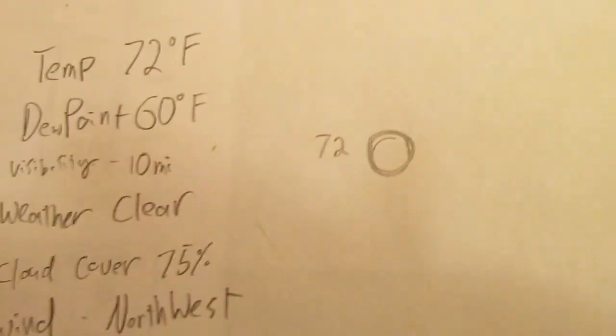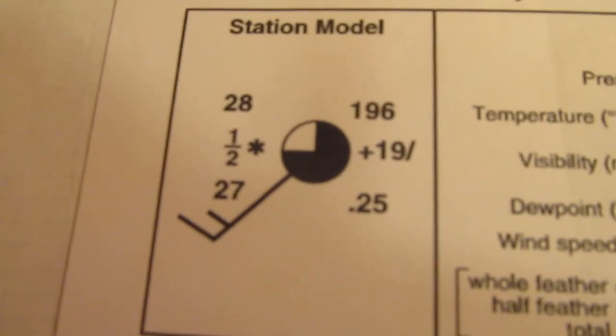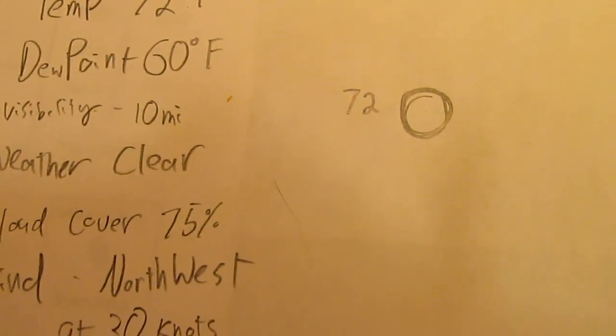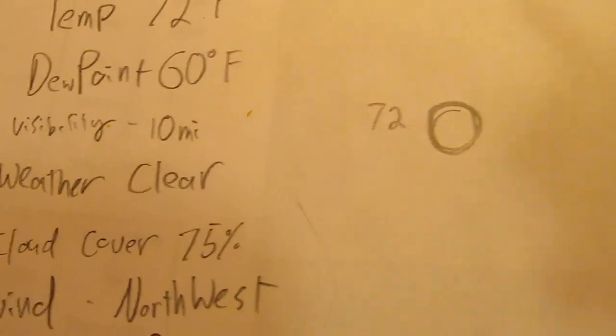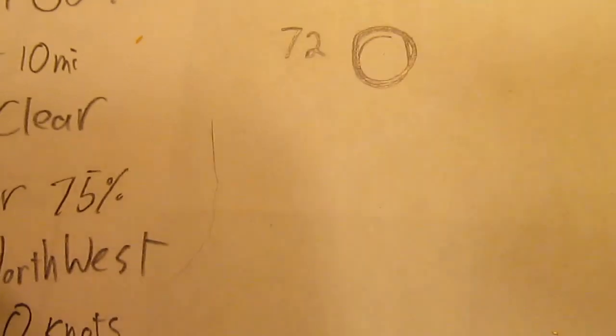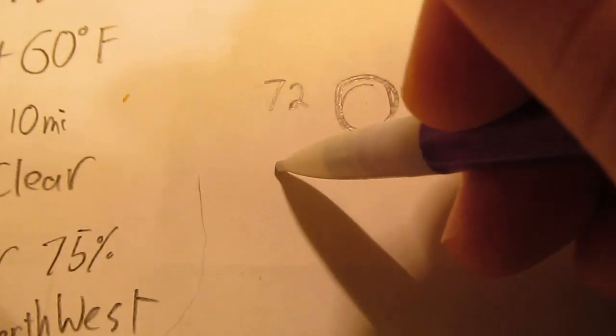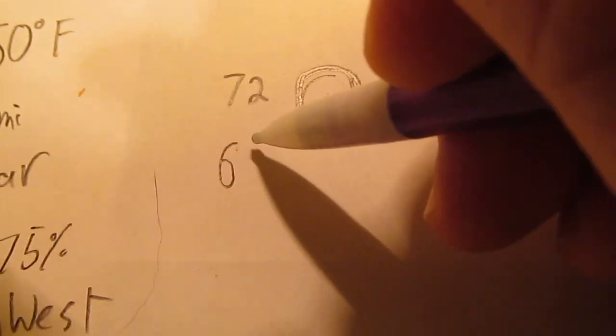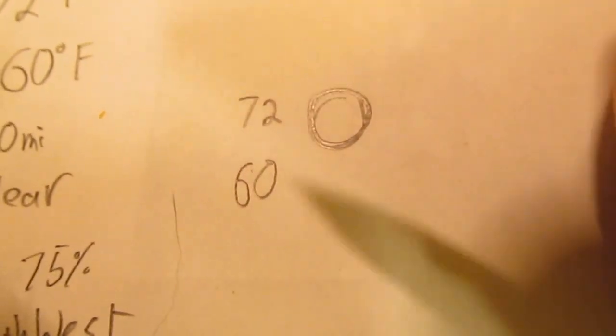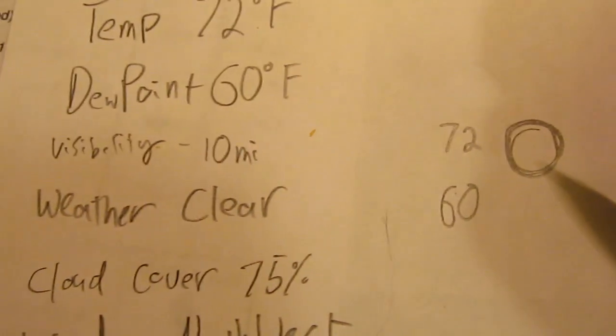I don't have to put degrees. I don't have to put Fahrenheit, right? Take a look at the example. Just numbers. So all that stuff about you have to have units. Well, we don't have to in this case. Dew point. Dew point goes on the bottom left. And so our dew point is 60. So I'm going to put dew point right down here. It's going to write 60. Once again, no degrees Fahrenheit, none of that other stuff.